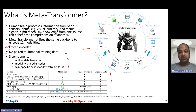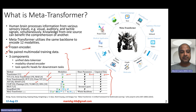Comparing Meta Transformer to other models proposed in the past: the standard Transformer model can only deal with text, requires no paired data, and has no parameter sharing. There have also been single-modality transformer models like ViT for images, Point Transformer for point clouds, and AST for speech. More recently, transformer models that process multiple — typically two — modalities have emerged.